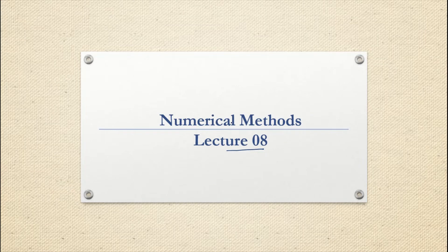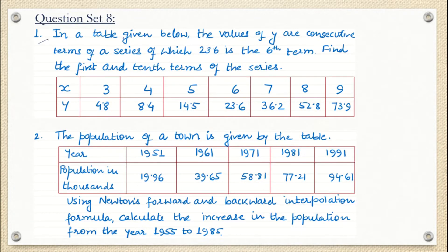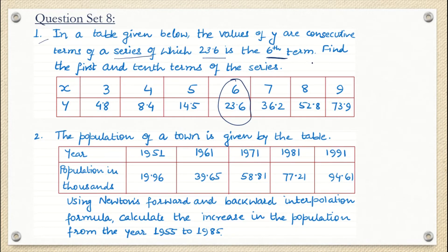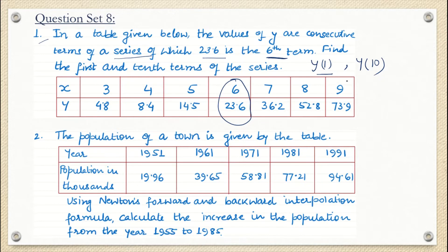We will directly go to see the questions. In question number one, the question says that in the table given below the values of y are consecutive terms of a series of which 23.6 is the sixth term. Find the first and tenth terms of the series — that is, find y1 and y10. The values of x start from 3 and end at 9, but they are asking what is y at x equals 1 and y at x equals 10. These questions come under extrapolation, which also gets solved under interpolation method.